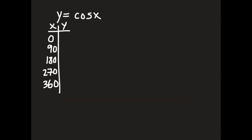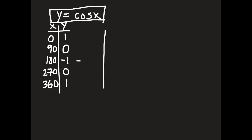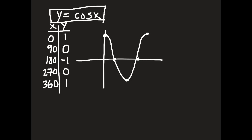For y equals cos x and y equals negative cos x: cos of 0 is 1, cos of 90 is 0, cos of 180 is negative 1, cos of 270 is 0, and cos of 360 is 1. Graphing one full cycle, it starts at 1, goes down to 0, to negative 1, back to 0, and back up to 1 — following the same curvature as y equals sin x. All of these functions are embedded in each other.